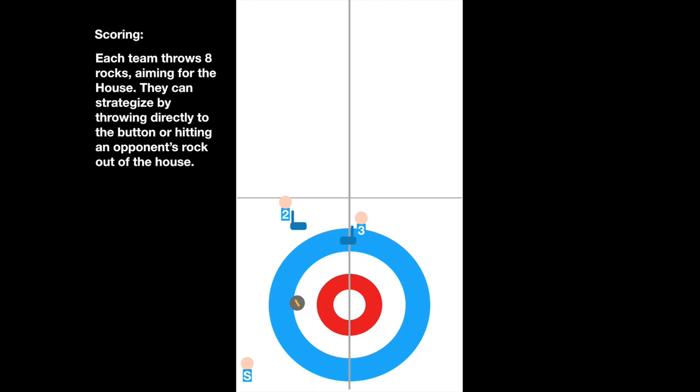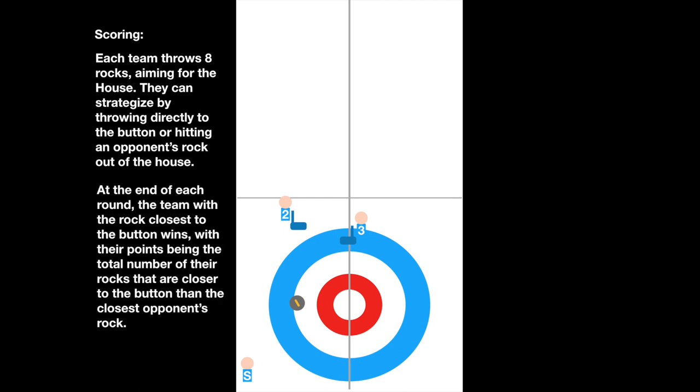Each team throws eight rocks per end, aiming for the house. They can strategize by throwing directly to the button or hitting an opponent's rock out of the house. At the end of each round, the team with the rock closest to the button wins, with their points being the total number of rocks that are closer to the button than the closest opponent's rock.